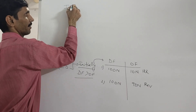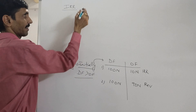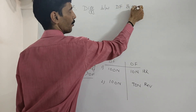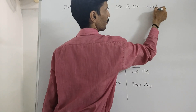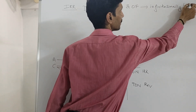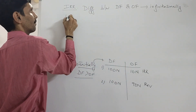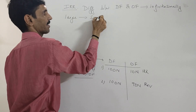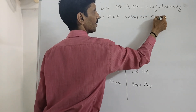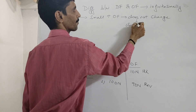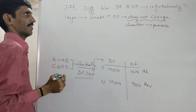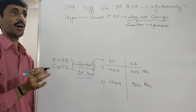First of all, in an irreversible process: the difference between the driving force and opposing force is infinitely large, such that a small increase in the opposing force does not change the direction of the process. Such processes are called irreversible.